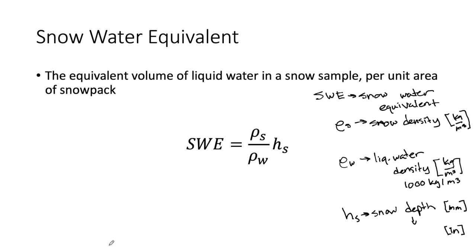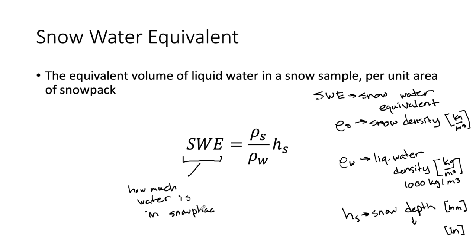SWE is what we as hydrologists care about — it tells us how much water is in the snowpack. If we are interested in how much water we might have to grow crops, supply fisheries, or support boating during the spring and summer runoff season, we really want to know the volume of water stored in our snowpack in a watershed. SWE is exactly a representation of that, and it has units of depth.